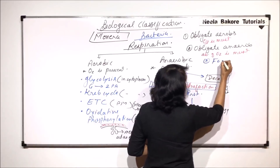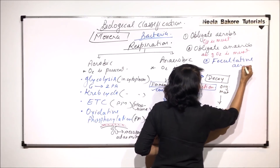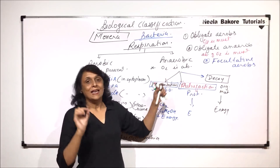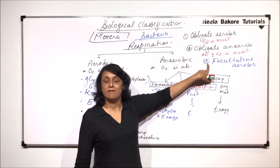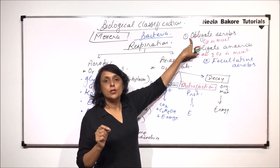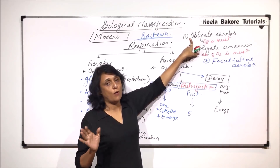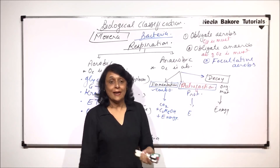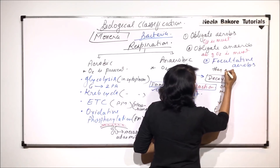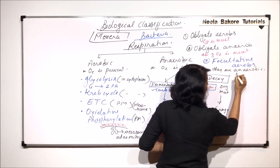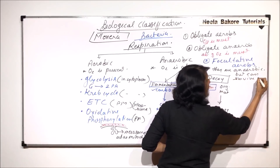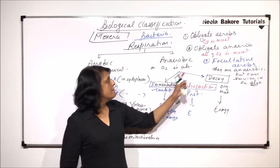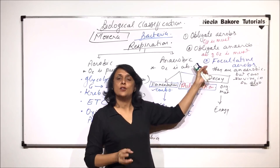The third term is facultative aerobes. These bacteria can survive in the presence of oxygen also. Normally they are anaerobic, but they can survive in oxygen as well. So 'obligate' means that condition is a must, and 'facultative' means that condition is also acceptable — they can survive in it, but normally they are anaerobes.